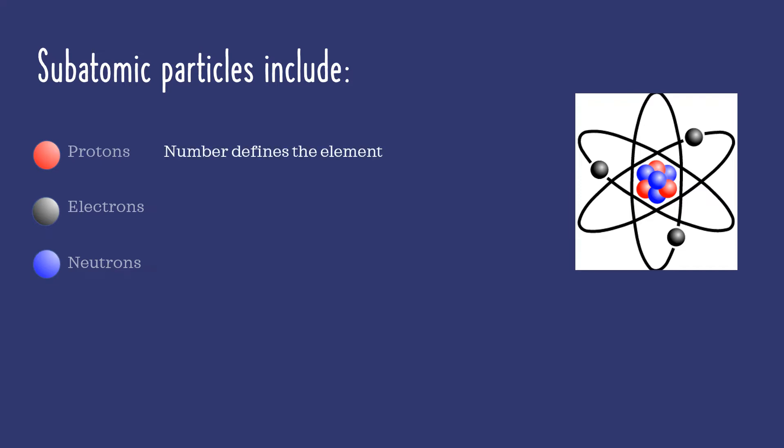The number of protons in an atom defines what element it is. In this example, I see three red dots representing protons. Using a periodic table to find which element always has three protons in its atoms reveals that this atom is lithium or Li for short, the metal used in lithium ion batteries.